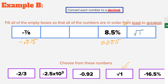Next we have negative two-thirds, which is negative 0.6 repeating — use the decimals calculator if needed. Then we have negative 2.5 times 10 to the positive third. A positive exponent means we move our decimal three places to the right — that doesn't make the number positive, it just moves the decimal — so we end up with negative 2,500.